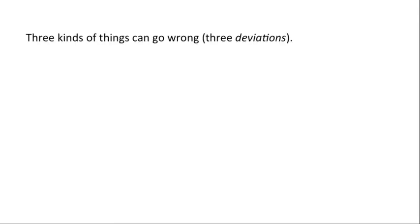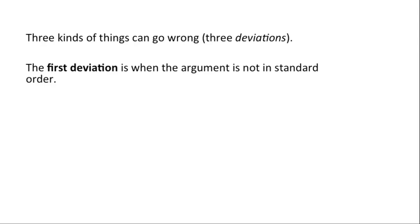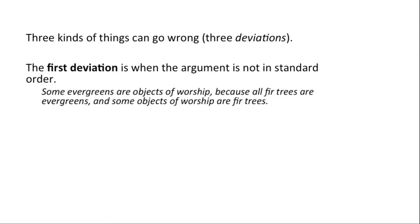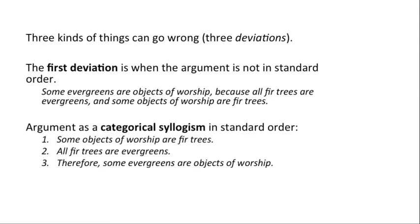There are three kinds of things that can go wrong when you've got an argument and you're trying to look at it in categorical terms. They're called three deviations. The first deviation is when the argument's not in standard order. For example, we already saw things like this in section 6.2: 'some evergreens are objects of worship because all fir trees are evergreens, and some objects of worship are fir trees.' We have to put them in the right order: one, some objects of worship are fir trees; two, all fir trees are evergreens; three, therefore some evergreens are objects of worship. The first deviation is when you just need to put things in order — that's covered in 6.2.